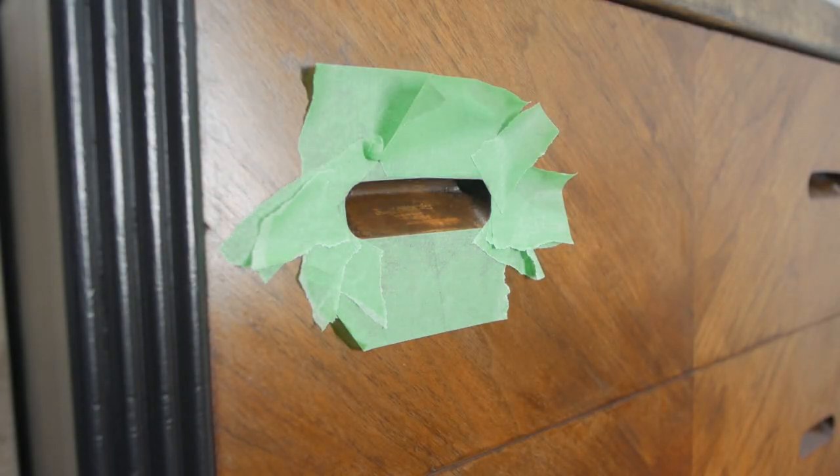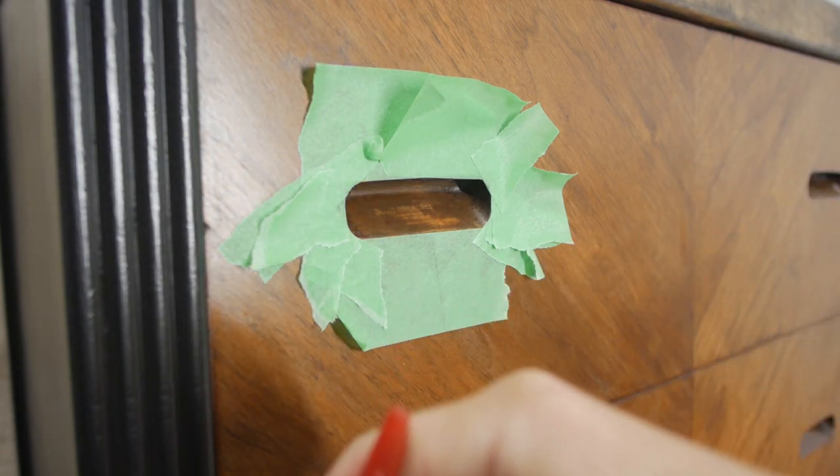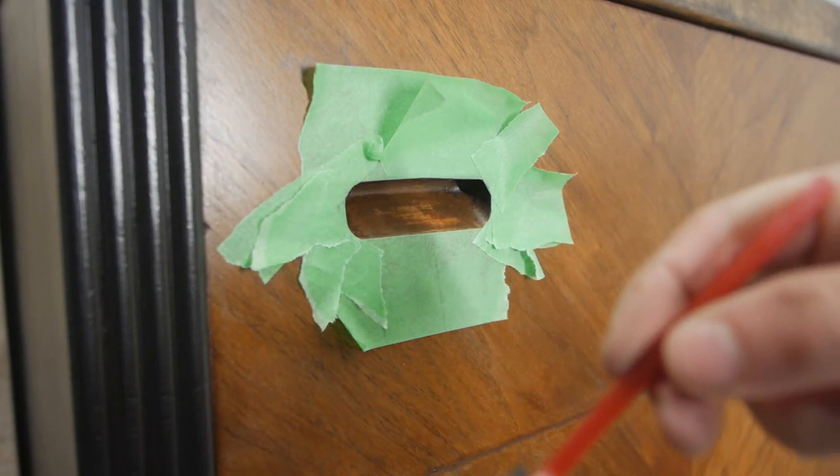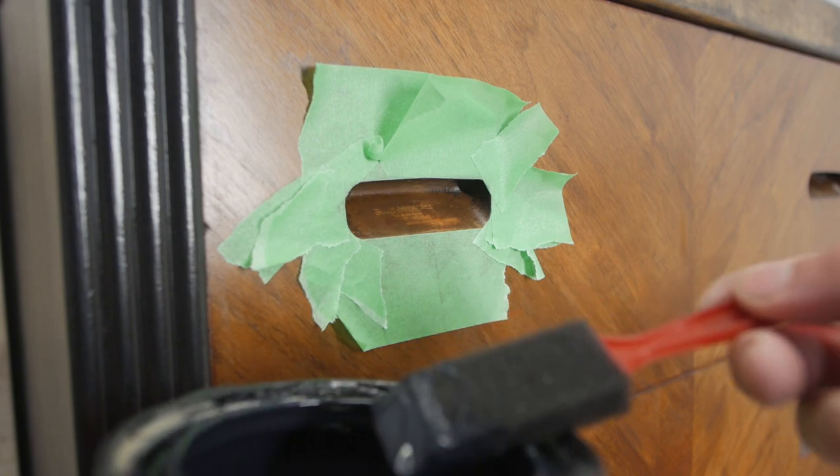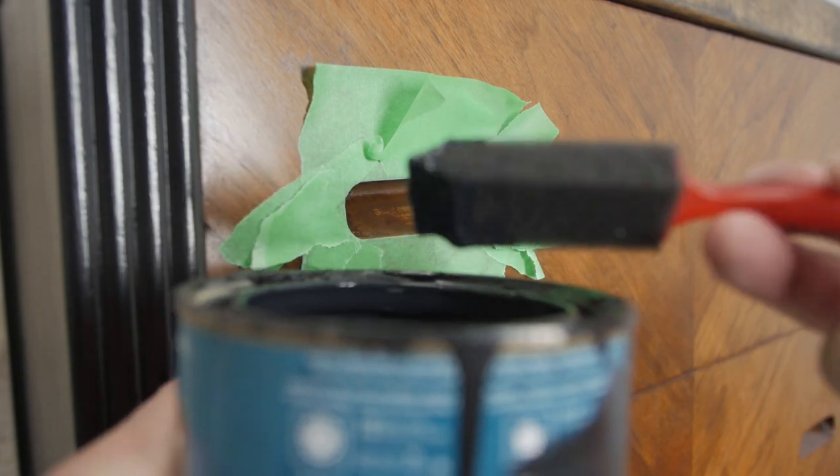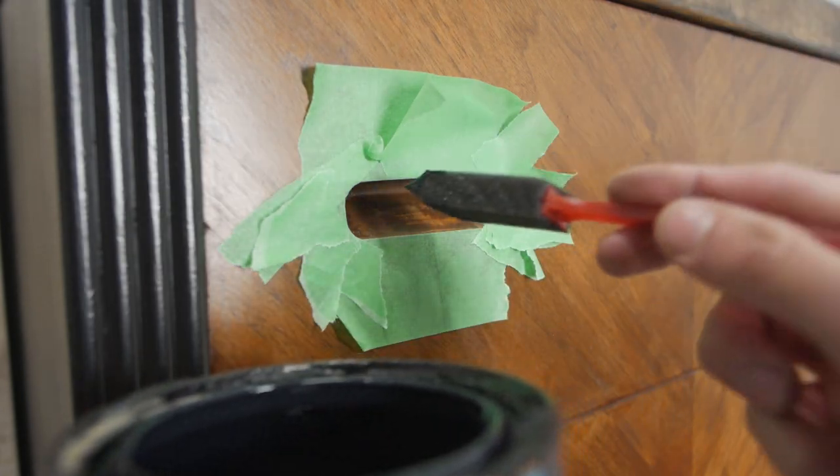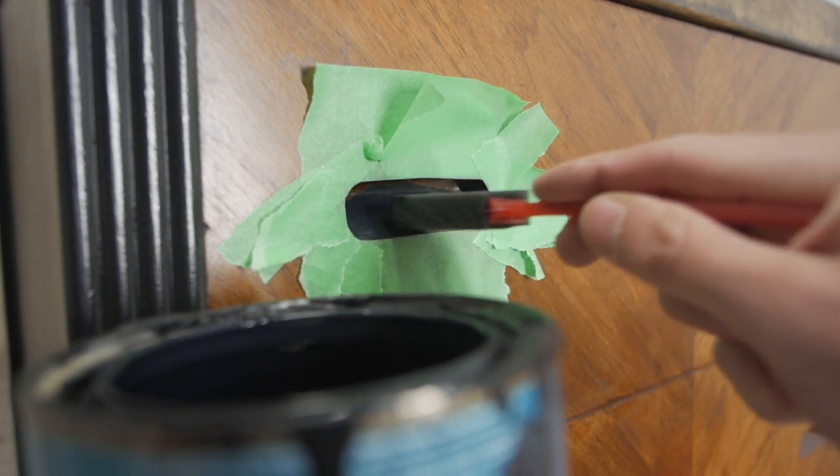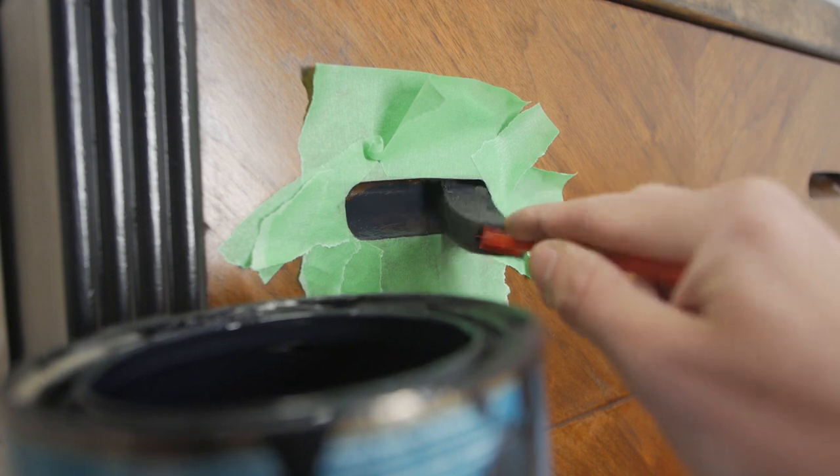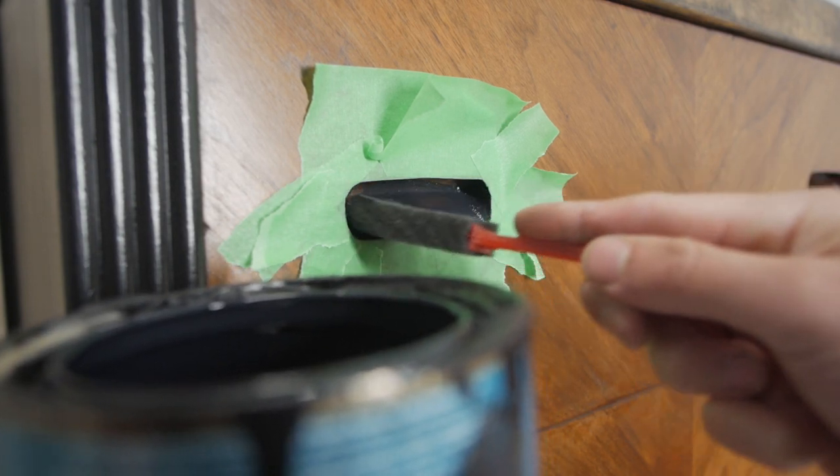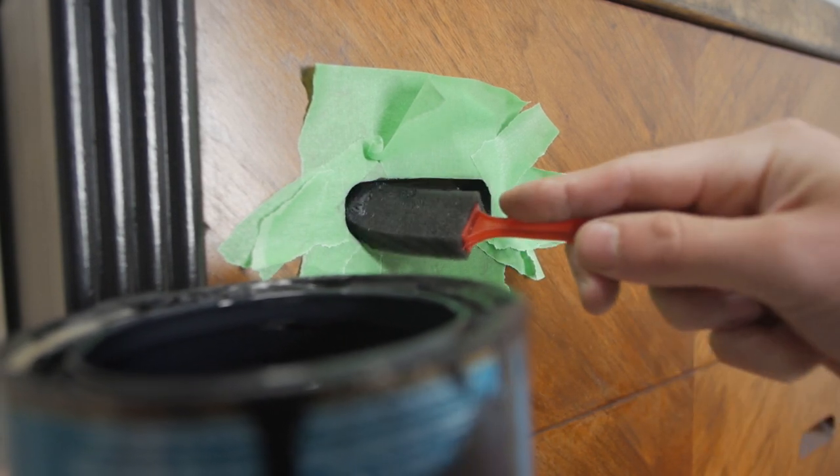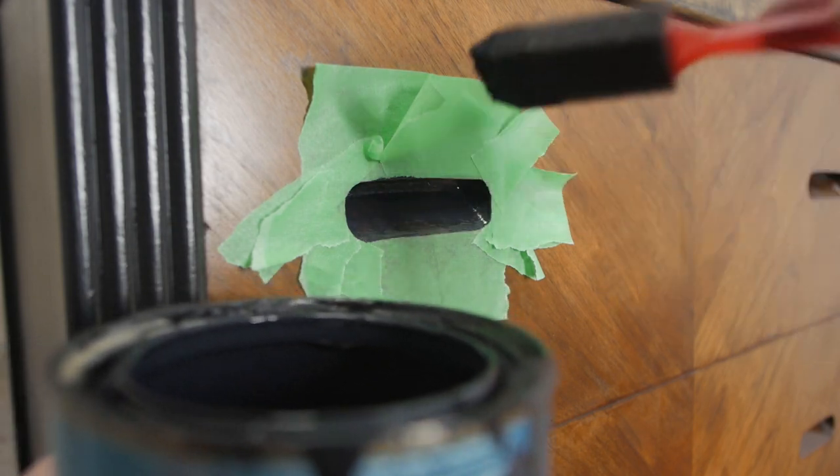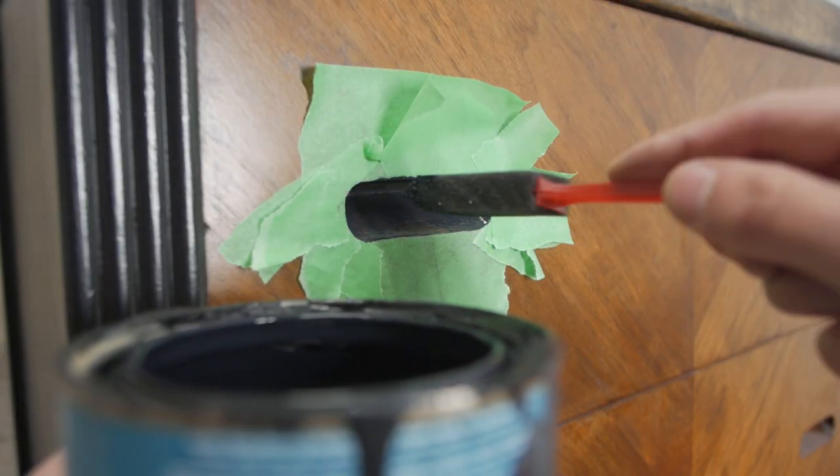After four coats of lacquer with light sanding with 220 grit in between, I decided I'm going to paint the handles black on the inside of the drawers. This took three coats of applying black paint on the handles. When that was dry I just sprayed a light coat of lacquer over the top of it for durability.